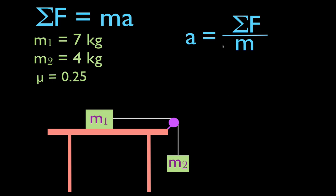We were given the masses, so we just have to sum up the forces. Before drawing the forces, we're going to determine the positive direction for each object. For M1, which moves to the right, positive is to the right. For M2, which moves down, positive is downward. The opposite directions are negative.